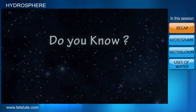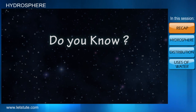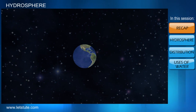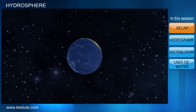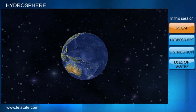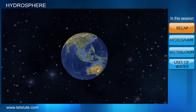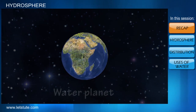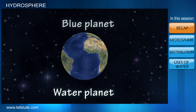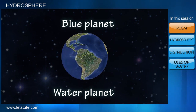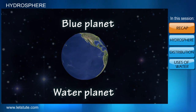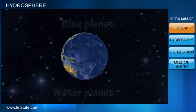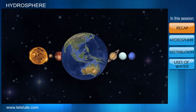Friends, do you know something? If you view planet Earth from space, it looks blue as a major part of the Earth's surface is covered with water. This is the reason why Earth is known as the water planet or blue planet, and this abundance of water is what distinguishes Earth from other planets of our solar system.